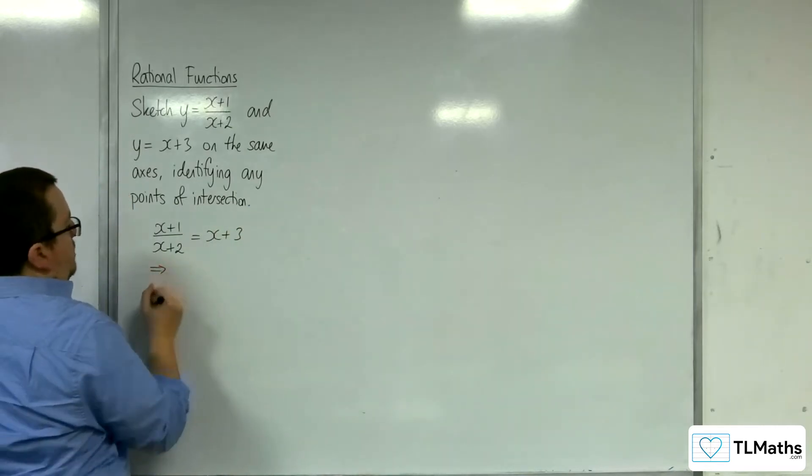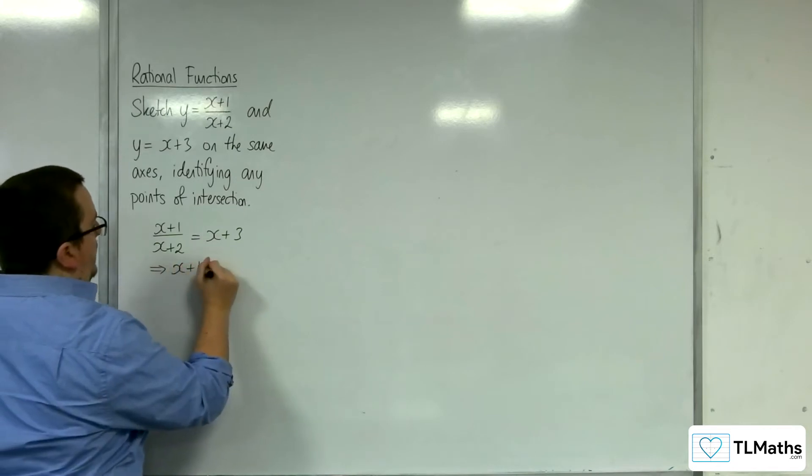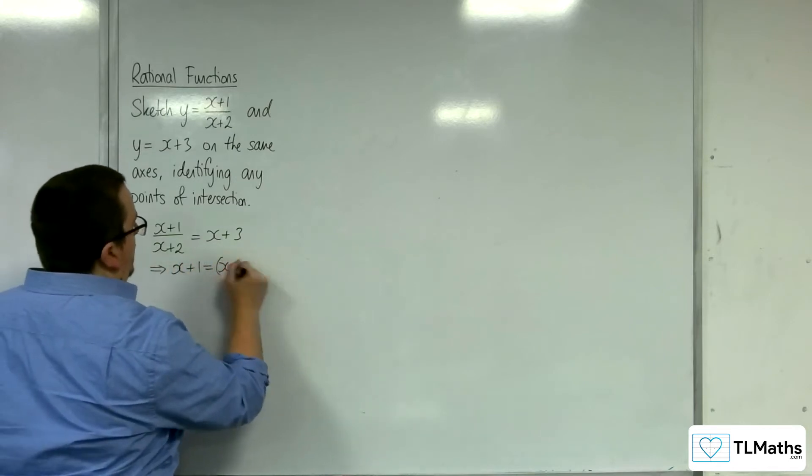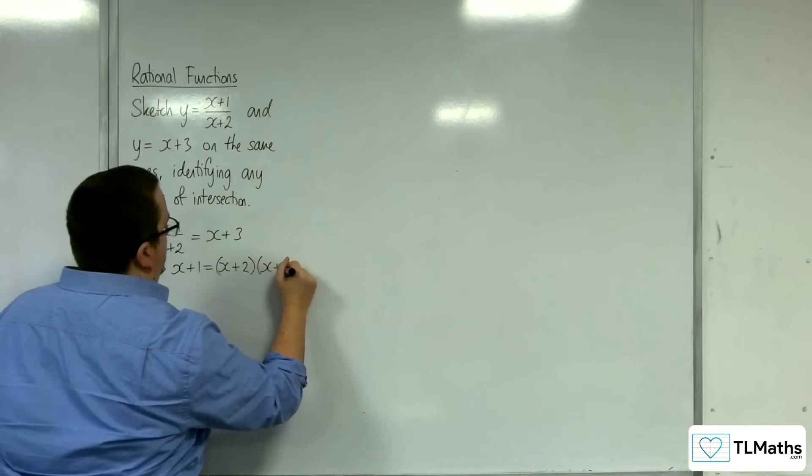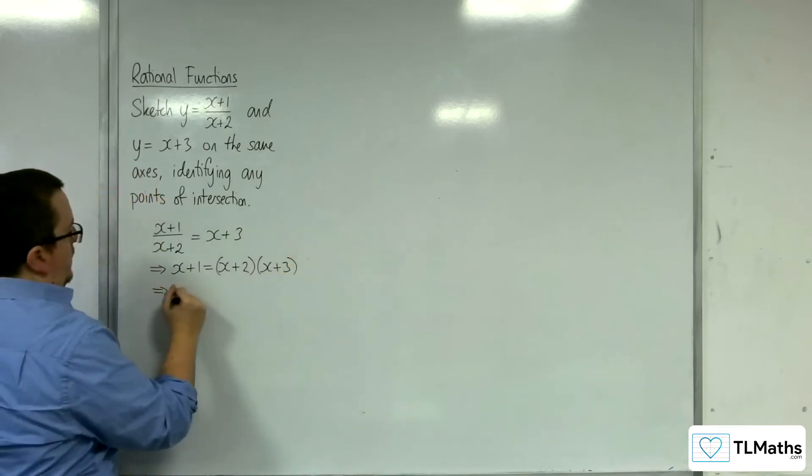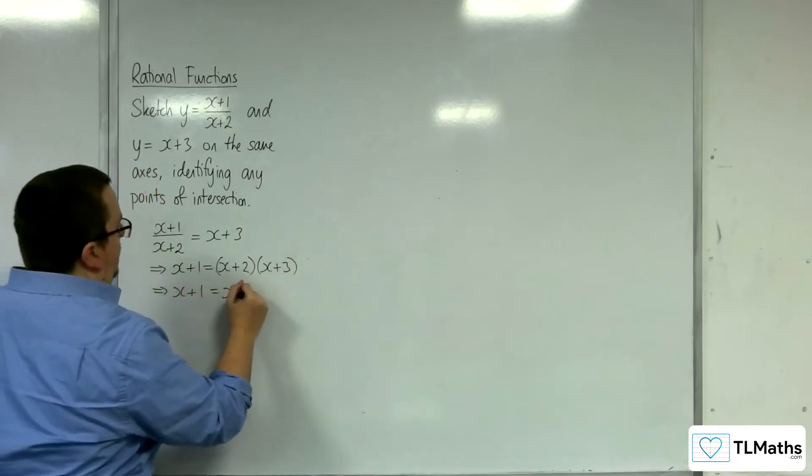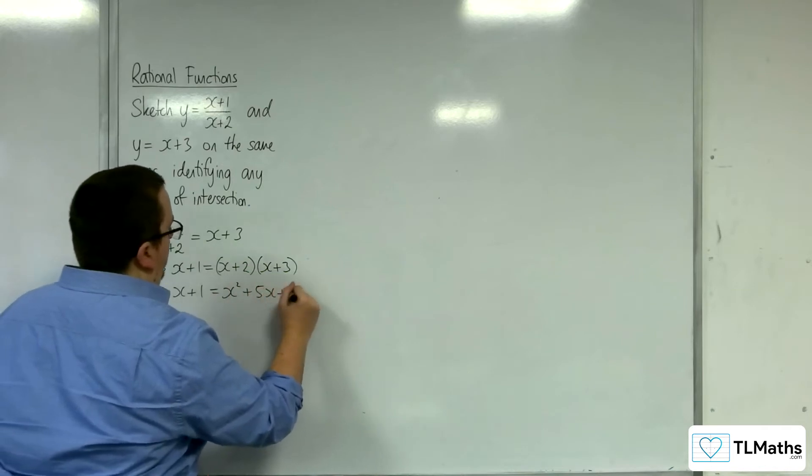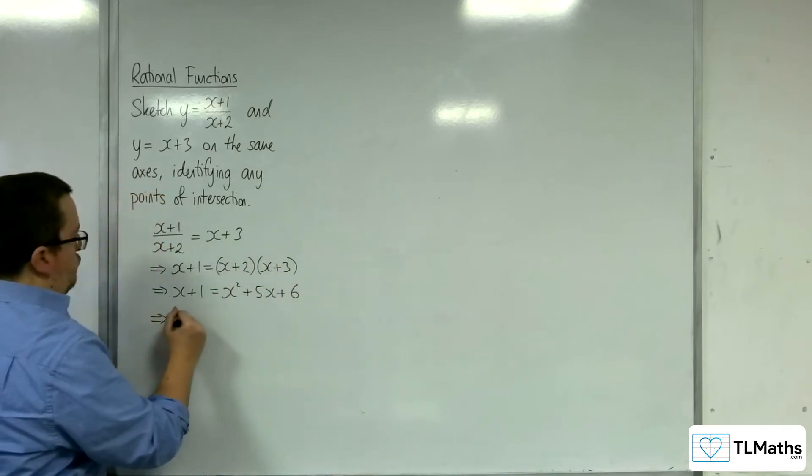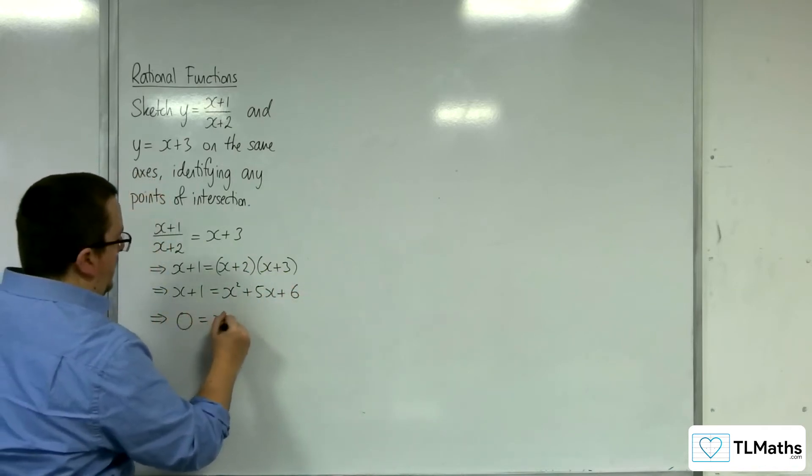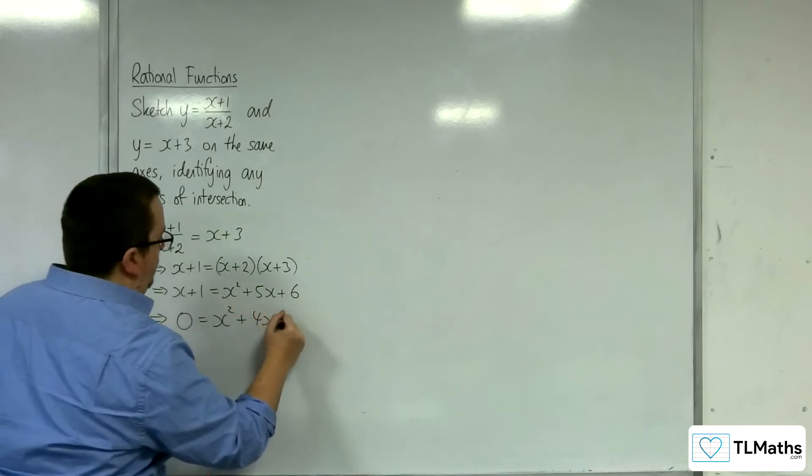So I'm going to multiply it by x plus 2, so x plus 1 equals x plus 2 times x plus 3. So I'm going to need to expand that out, x squared plus 5x plus 6. Move everything onto the right-hand side of your equation, so x squared plus 4x plus 5.